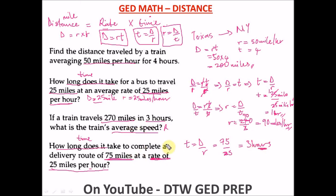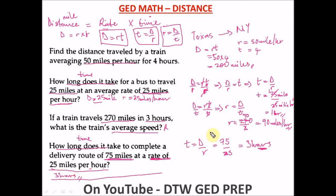Always remember your unit of measurement in maths. Some questions come without multiple-choice options, so if you just write '3' without the unit you'll lose a mark. Make sure you write '3 hours' as your answer. Thank you for staying tuned to the end of this video. From DTW Tutorials — you are destined to win in life and in your GED test. See you in our next video.